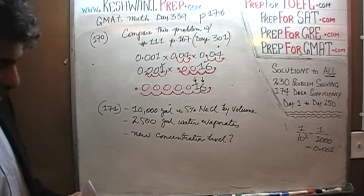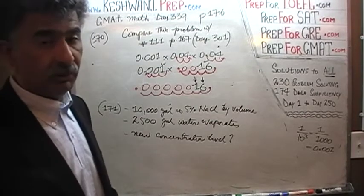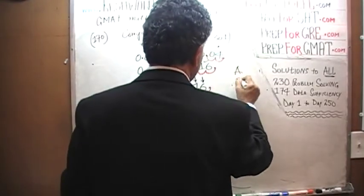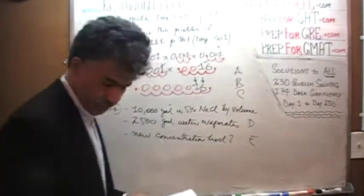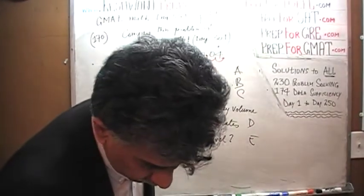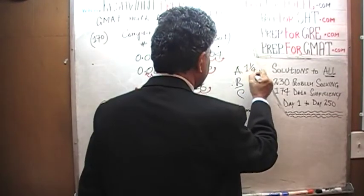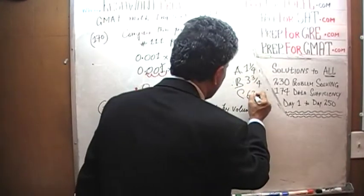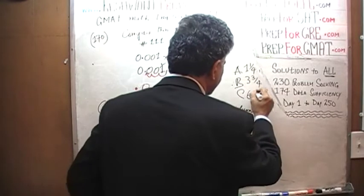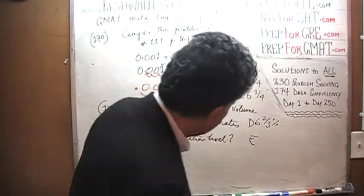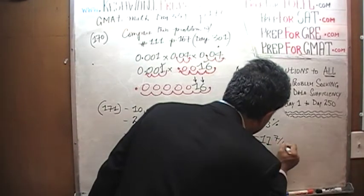What is the new concentration level? We started out with a 5% solution. Let's look at the answer choices: A is 1¼%, B is 3¾%, C is 6¼%, D is 6⅔%, and E is 11 and seventy percent — these are our percentages.